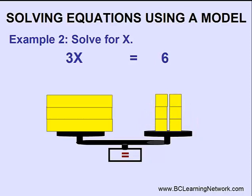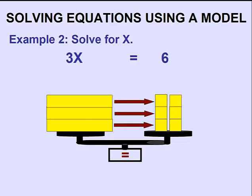We want to figure out what one rectangular box is equal to. If we divide it up into three, we know that each rectangular box must equal two square boxes. So our answer is x equals two.